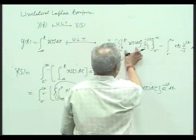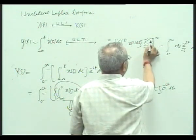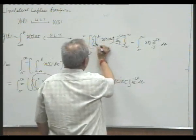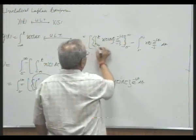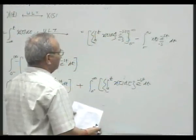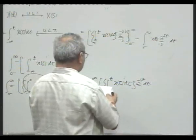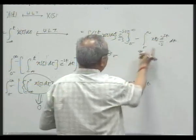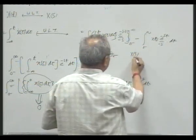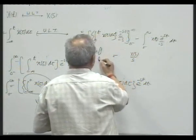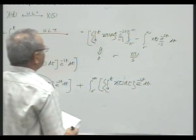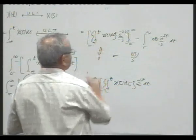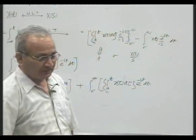Now let us see what this is. If we evaluate at infinity, this becomes zero because of the exponential factor, and if we evaluate at zero minus, the integral from zero to zero minus — this will be zero. So this term goes to zero, and we get: this is defined as plus X(s)/s. This will be the initial condition. At t equal to minus infinity, this becomes zero, and that gives us our result.